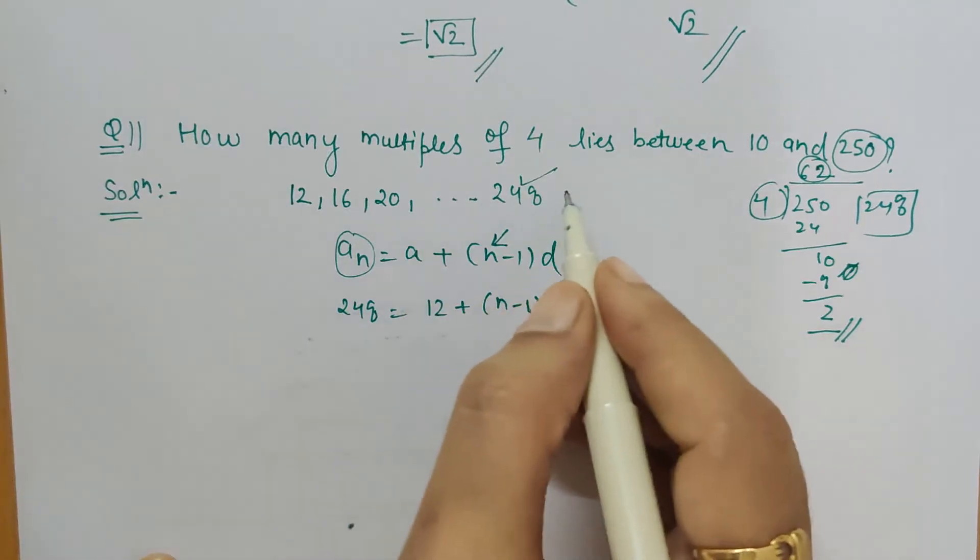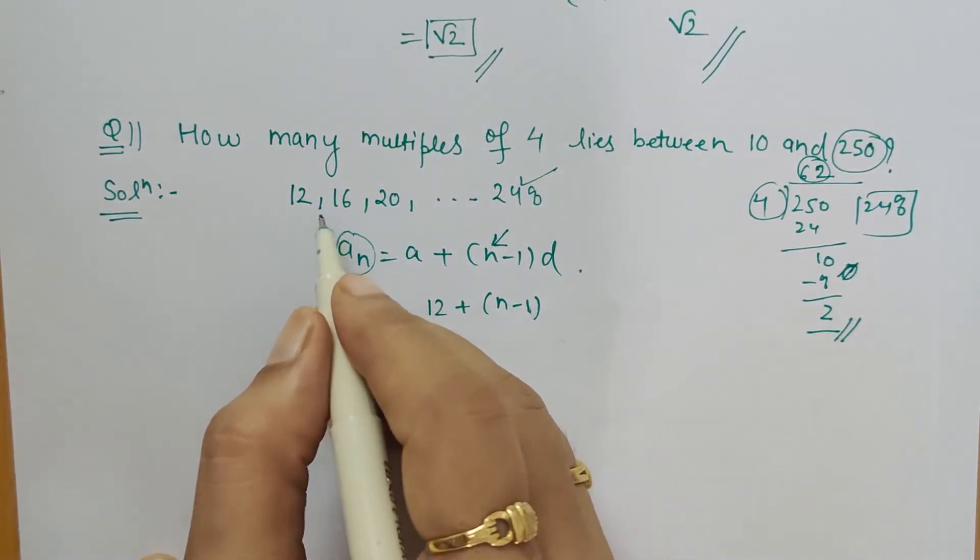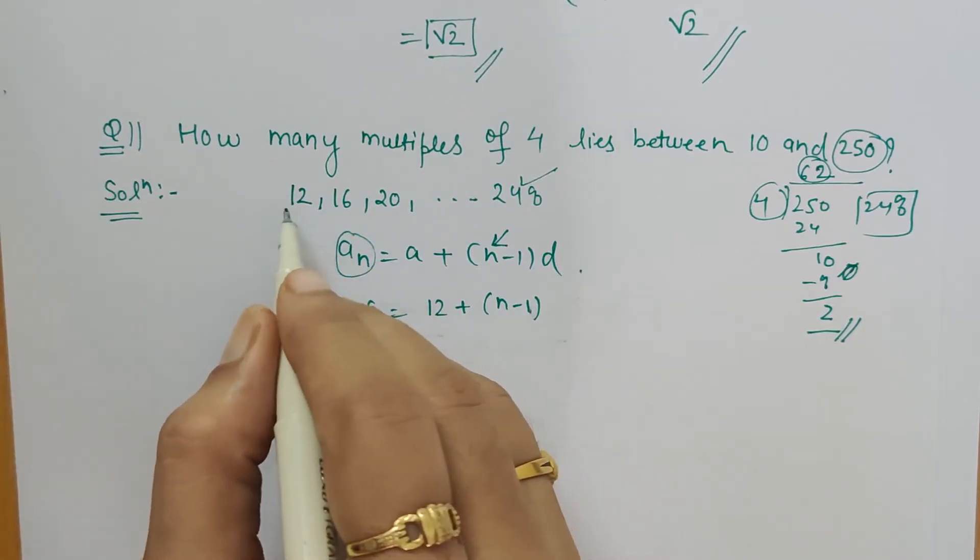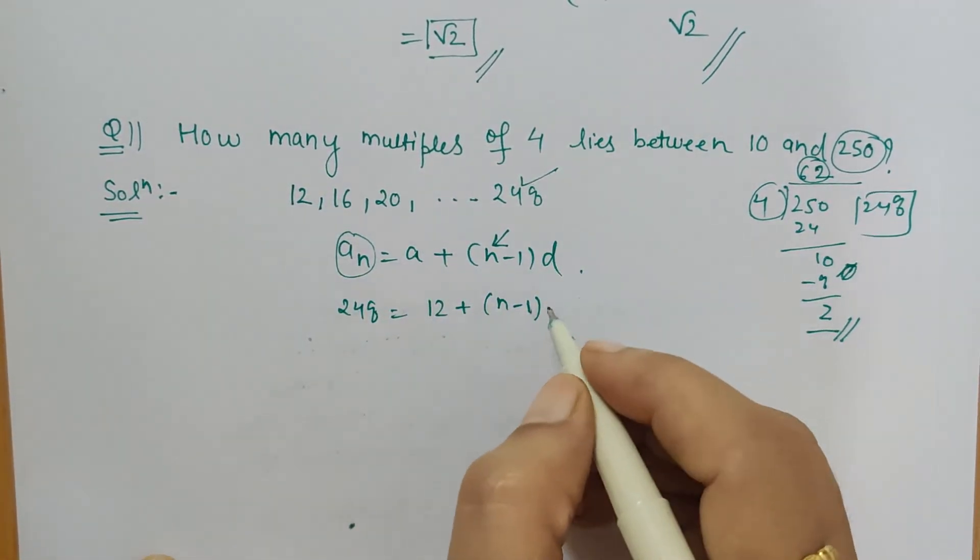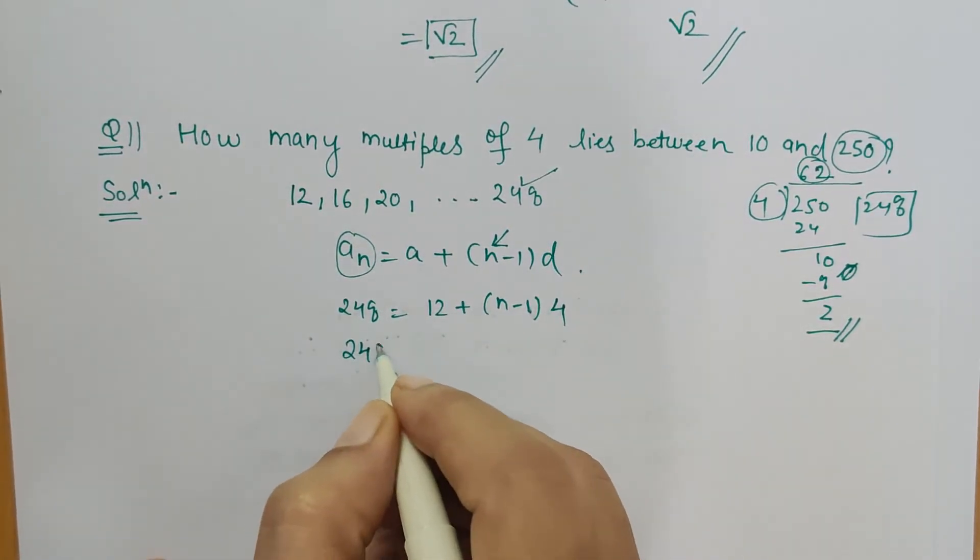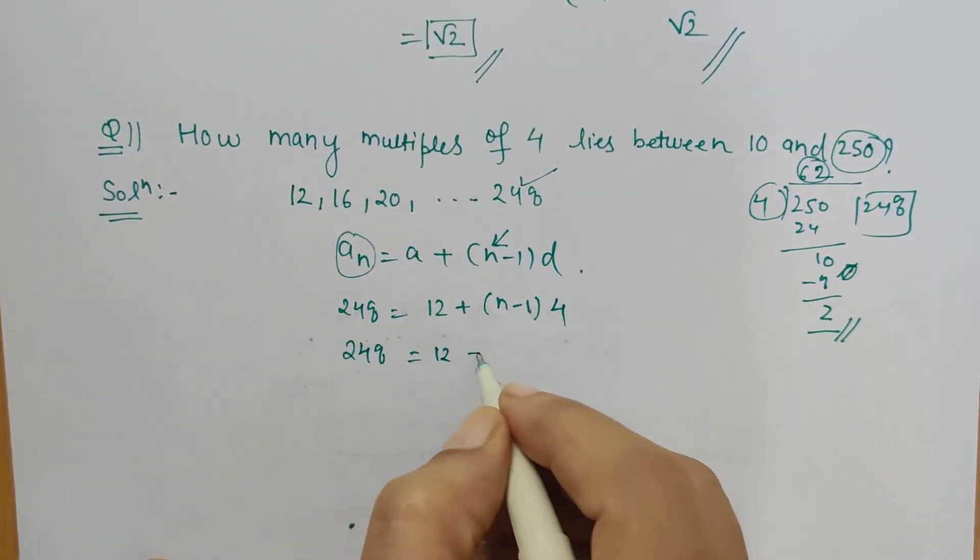Once we are aware it is an AP, the difference between any term and its preceding term will give the common difference. So here, common difference is 4. Now it's just simplification left for us: 12 plus 4n minus 4.